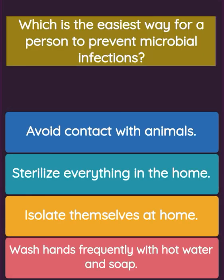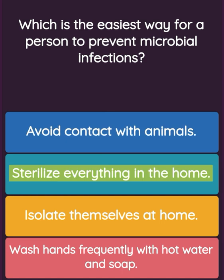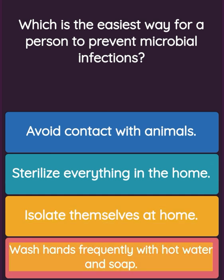Question: Which is the easiest way for a person to prevent microbial infections? Option one: avoid contact with animals. Option two: sterilize everything in the home. Option three: isolate themselves at home. Option four: wash hands frequently with hot water and soap.